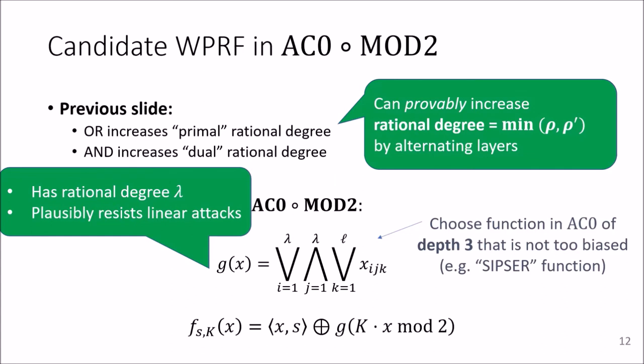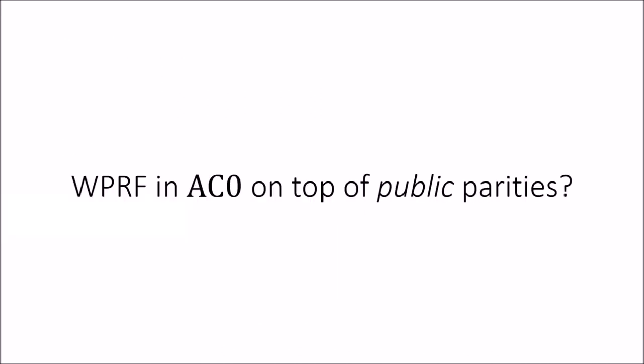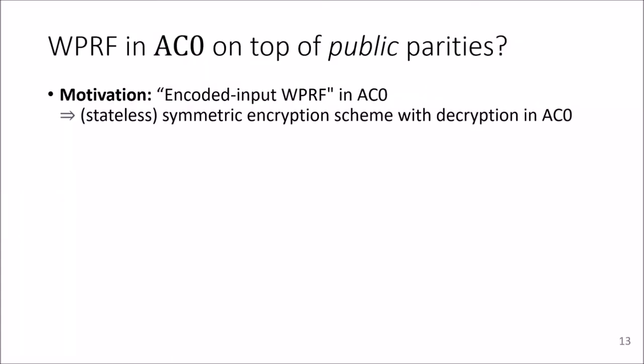So that was our first candidate. Note here that the parities are secret, whereas the AC0 circuit is public. So the next question we considered in the work is, in some sense, can you do the other way around? Can you get a weak PRF in AC0 on top of public parities?